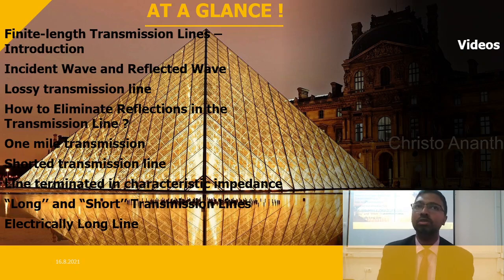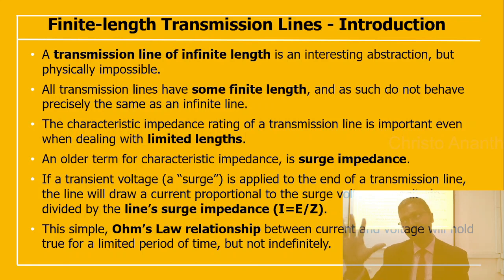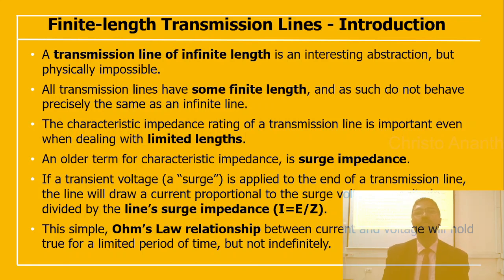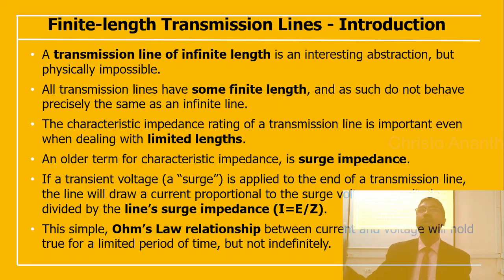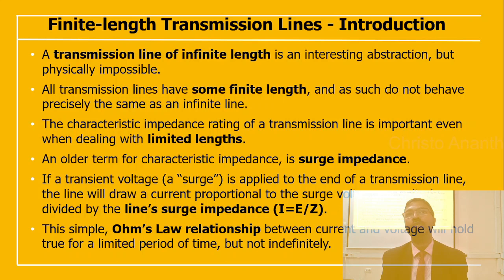A transmission line of infinite length is physically impossible. All transmission lines have some finite length and do not behave precisely the same as an infinite line. The characteristic impedance rating of the transmission line is very important even when dealing with transmission lines of limited length.